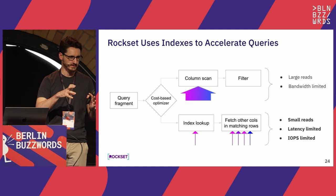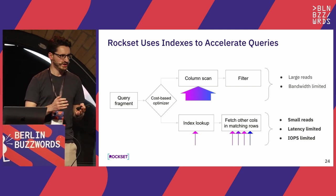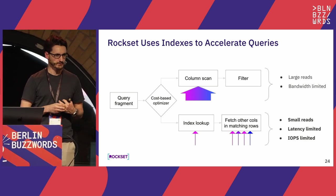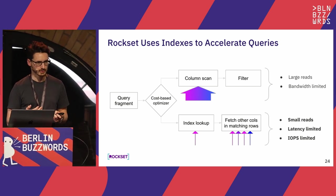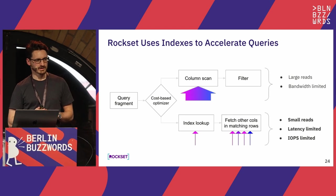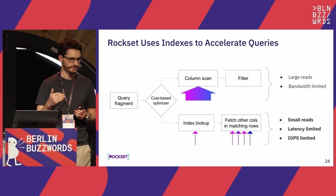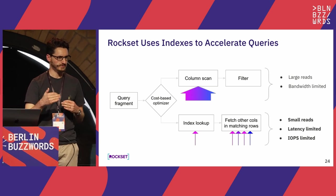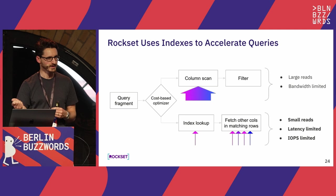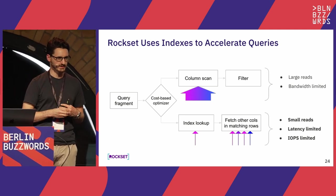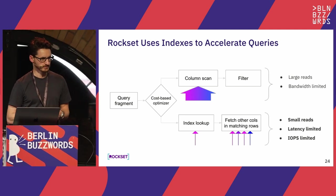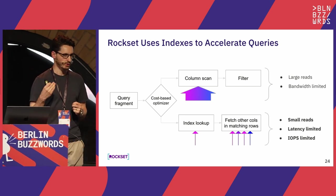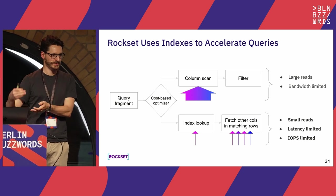For reads, we have different patterns based on the query. On column scans, you're bandwidth limited, not doing many small IOs. The hard part is search queries, where an index lookup produces a large number of random reads. Index lookup gives you a set of document IDs, and then you go to the document store to fetch the actual documents — even more small IOs. So our read patterns involve very small reads that are both latency-limited and IOPS-limited. And with doc sharding, we're even more IOPS-limited.